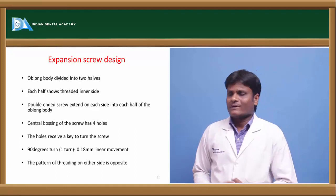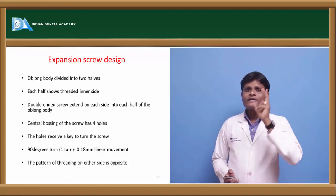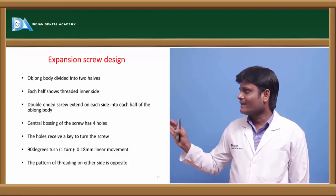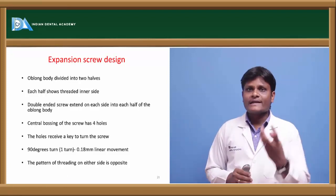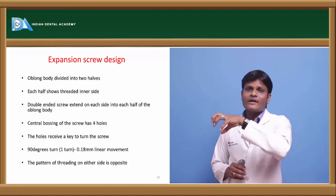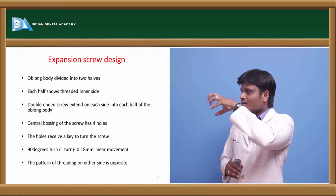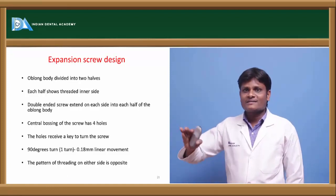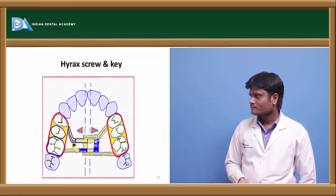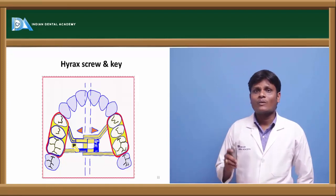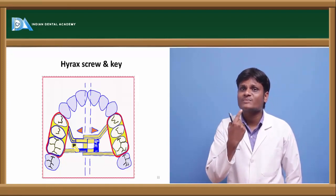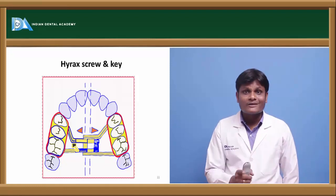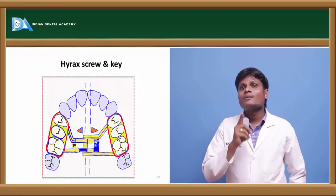The expansion screw has an oblong body divided into two halves. Each half shows a threaded inner side, and a double-ended screw extends into each half of the oblong body with a central bossing with four holes. The holes receive a key to turn the screw, and a 90-degree turn gives an expansion of 0.18 mm. The threading pattern on each side is opposite to the other. Once the Hyrax key is inserted into the hole and rotated 90 degrees — one turn — it expands by 0.18 mm.